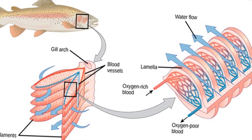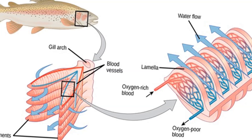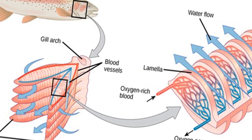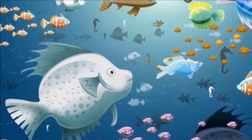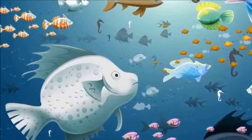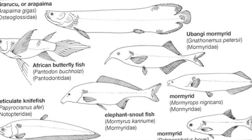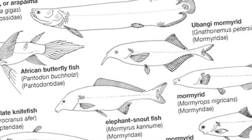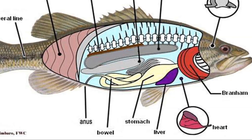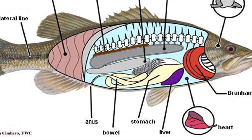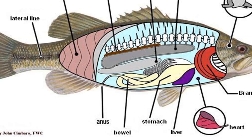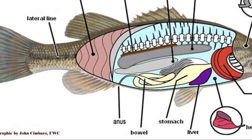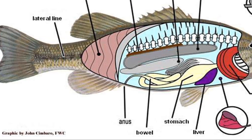The filaments and lamellae also dump carbon dioxide from the body into the gills, and water carries it out of the body. Many species, including sharks and bonefish, have a pumping mechanism that aids respiration. A fish out of water suffocates because its gill structures collapse and the oxygen exchange cannot continue.